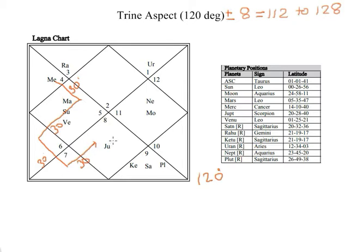Now, as we know Jupiter is at 20 degrees and Mercury is at 14 degrees. The distance between Jupiter and Mercury is 6 degrees.